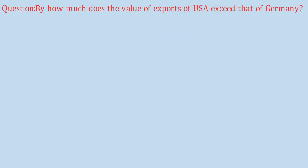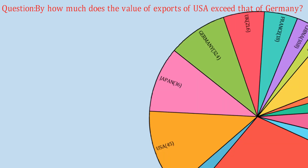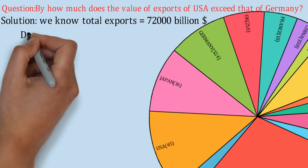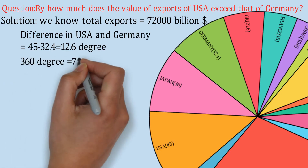The first question is: by how much does the value of exports of USA exceed that of Germany? The first thought that comes to mind is to calculate the exports of USA, then Germany, and find the difference — but that's the hard way. The smart way is to directly subtract the angles between the two and then carry out the calculation. The difference in angles between USA and Germany is 45 minus 32.4 degrees, which equals 12.6 degrees.